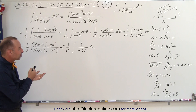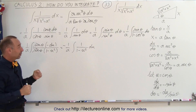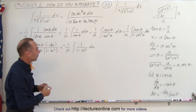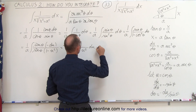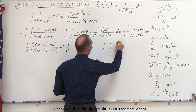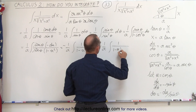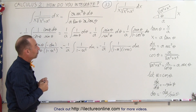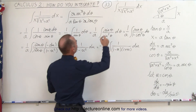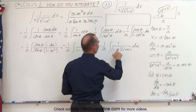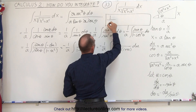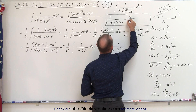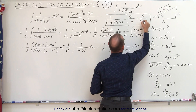Now we have it in a format where we can use partial fractions. You might be pulling your hair out, but we just need to keep going — and after a while that technique becomes fairly comfortable. So this is equal to minus 1 over a times the integral of 1 over (1 minus u)(1 plus u) du. Now we can go ahead and use partial fractions.